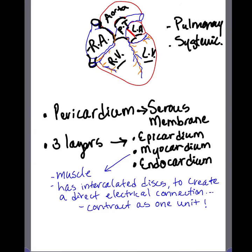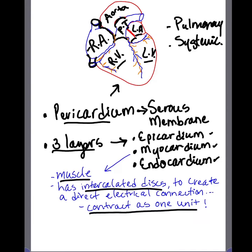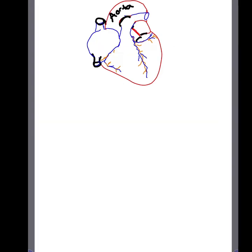Don't forget that the heart has a pericardium, which is the serous membrane that protects the heart on the outside. If you look at the layers of the heart, it has three layers: an epicardium, myocardium, and endocardium. The myocardium, the middle layer, is the muscle that contracts. This muscle has intercalated discs that create a direct electrical connection, making it contract as one unit.